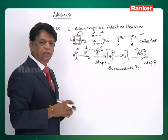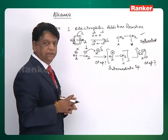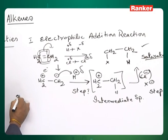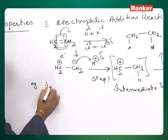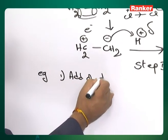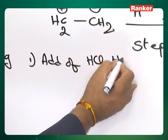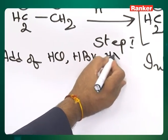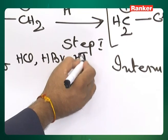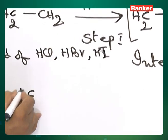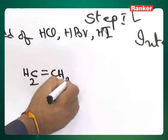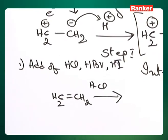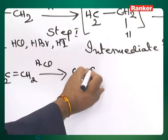Both the inductomeric and electromeric effects are useful to explain how the reaction takes place, and finally what you get is a saturated product. Let us take examples: HX refers to addition of HCl or HBr. These all come under the category of one H and one halogen — HI, HBr, HCl all add to ethylene without any catalyst because ionization is ready, and you get ethyl chloride, ethyl bromide, and so on.